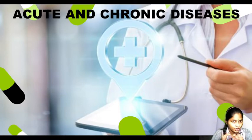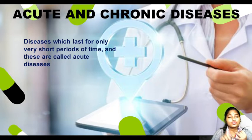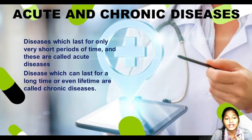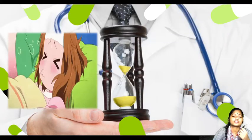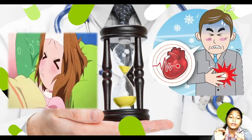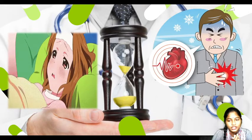There are two types of diseases: acute disease and chronic disease. Acute diseases last for a very short period of time — like common cold or fever. You take medicine and get better within a week. Chronic diseases last for a long period of time, even a lifetime — such as diabetes or heart disease. These are chronic — they stay with you for a lifetime, and the person needs to remain on proper medication throughout their life. So, diseases lasting a short period are called acute diseases, and those lasting long-term are called chronic diseases.